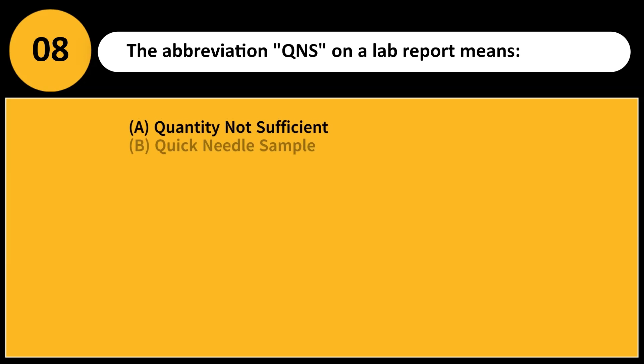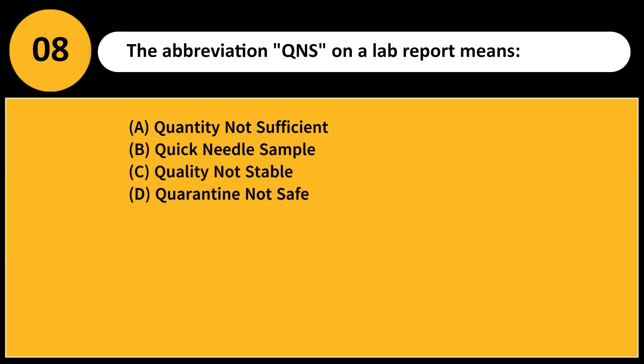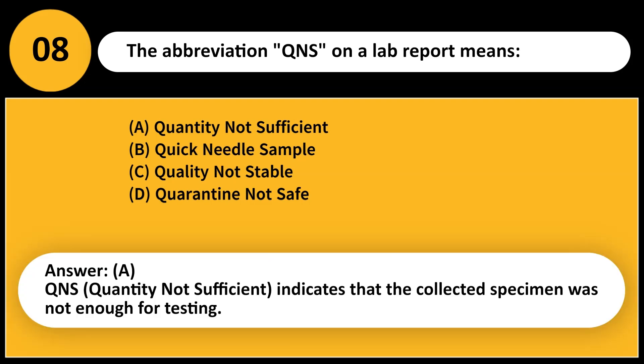The abbreviation QNS on a lab report means: A. Quantity not sufficient B. Quick needle sample C. Quality not stable D. Quarantine not safe. Answer: A. QNS — quantity not sufficient — indicates that the collected specimen was not enough for testing.